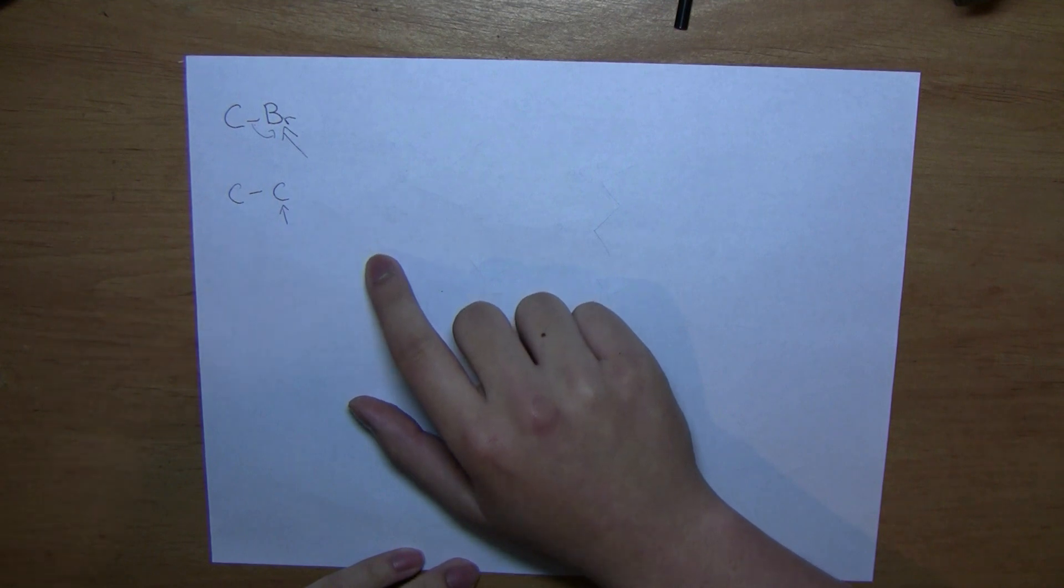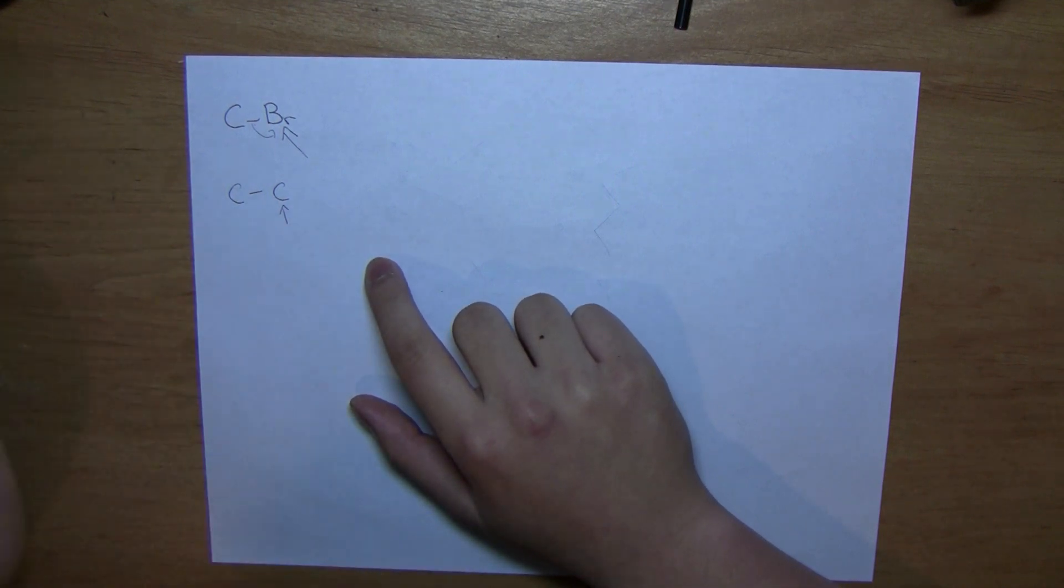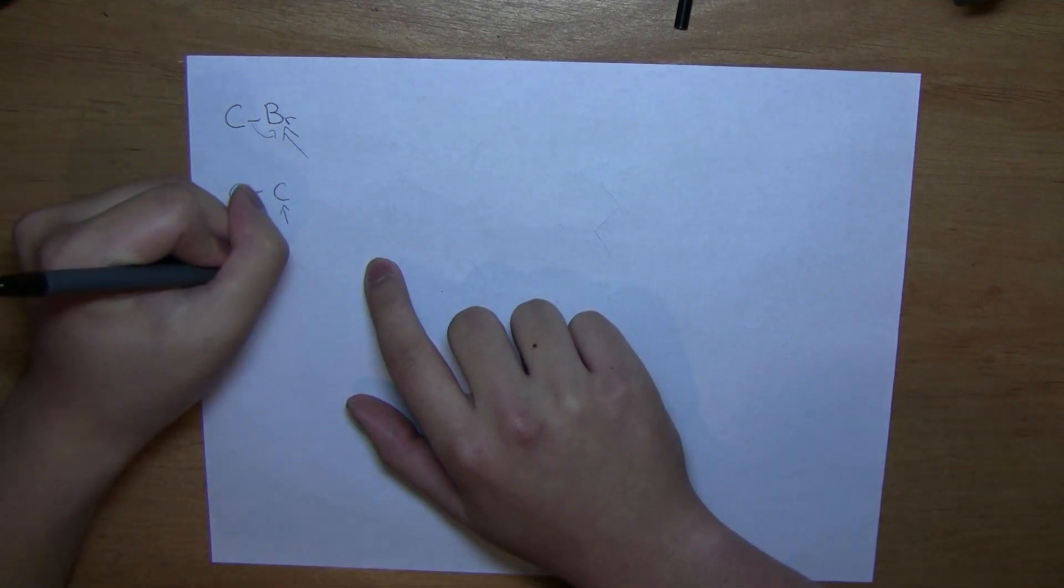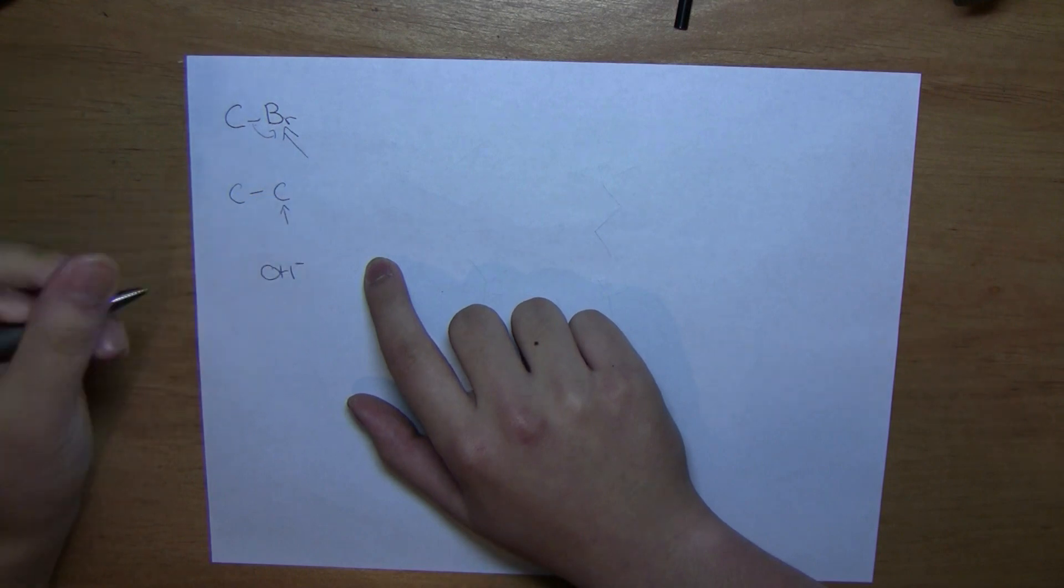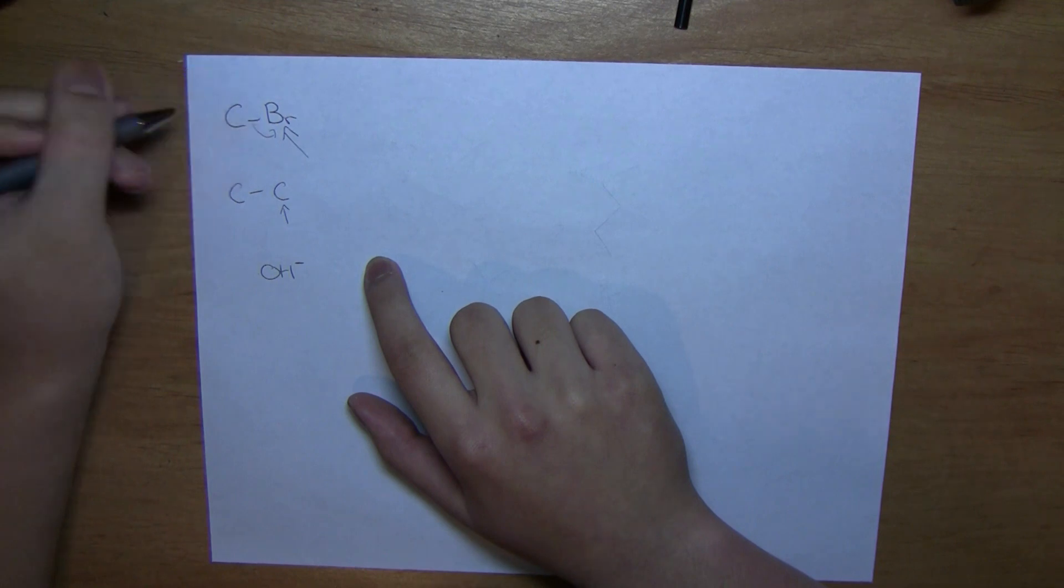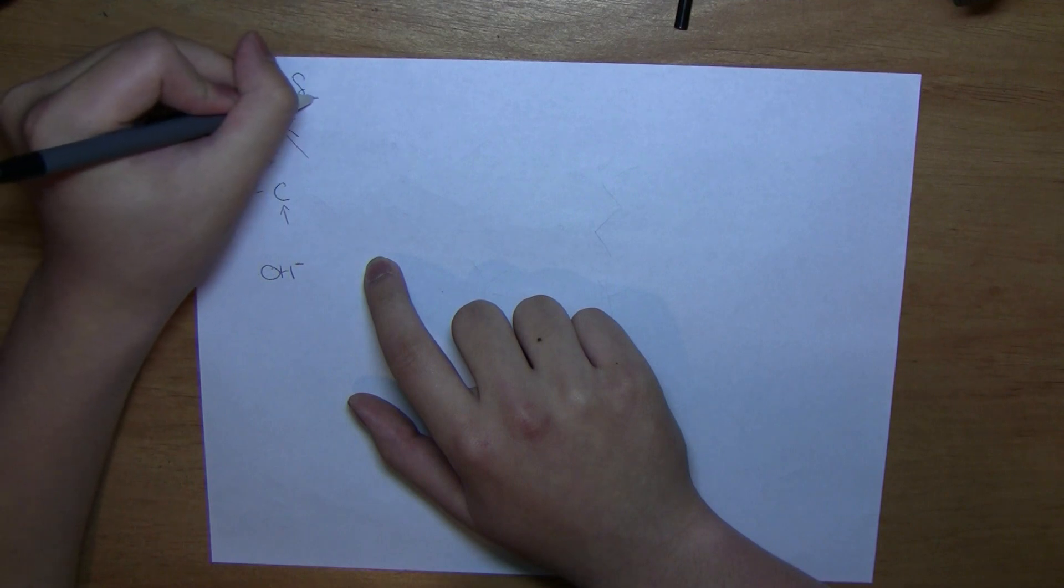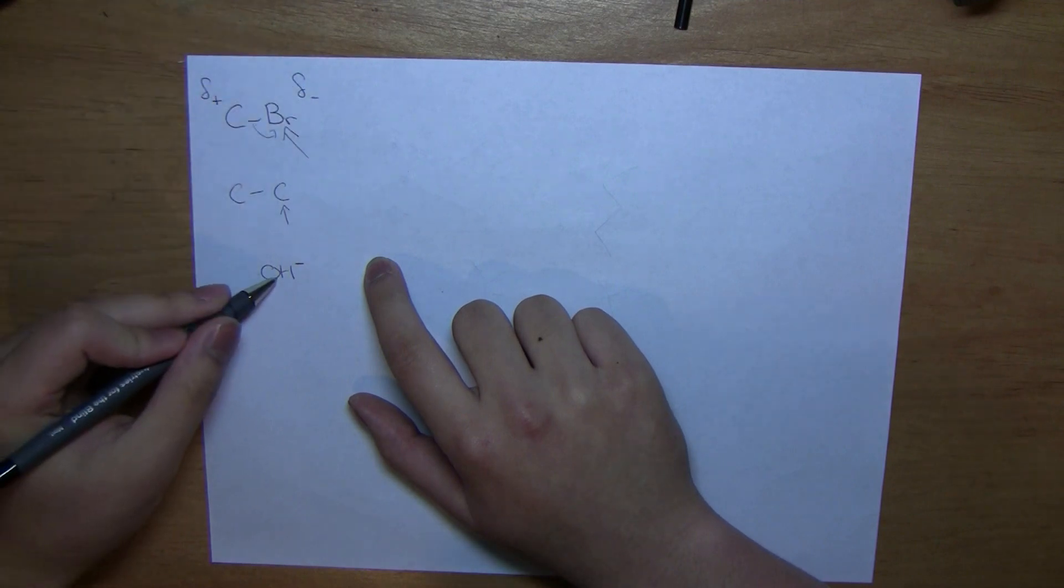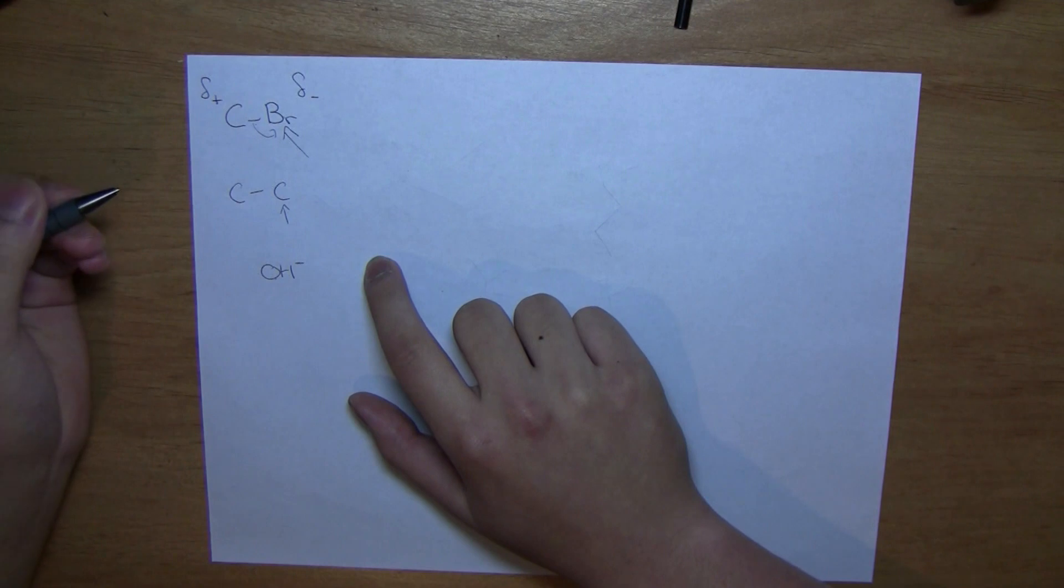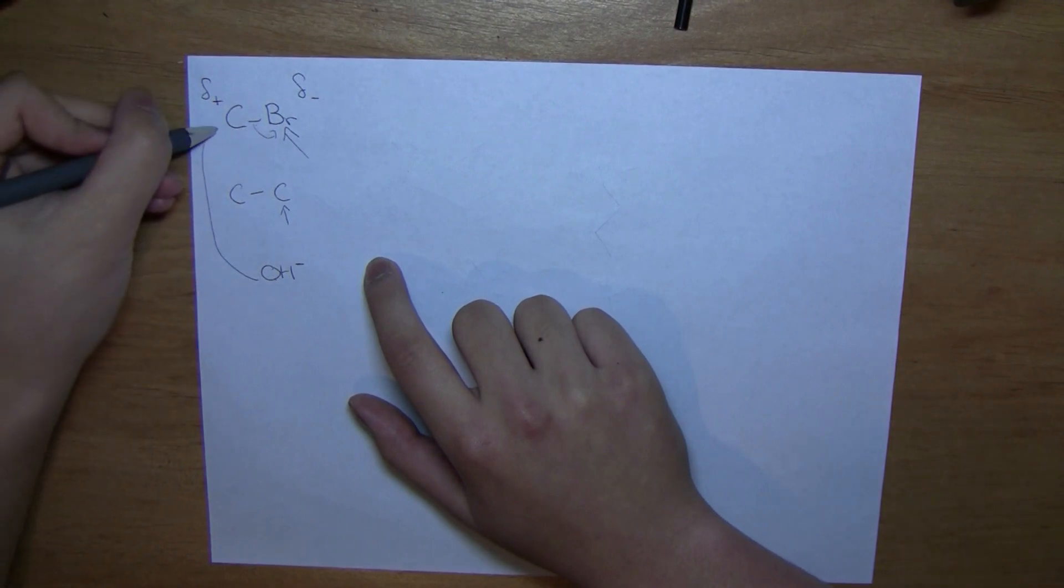Now, for substitution reactions, we want something known as a nucleophile, meaning something that is attracted to a positive charge. A good nucleophile is usually a strong base, such as hydroxide. Now, why do we want a negative charge here? Well, as you can see here, because of the polarity of the bond, the carbon is partially positively charged, and the bromide is partially negatively charged. So therefore, the negative charge of the hydroxide, or the nucleophile, would attack and be attracted to the carbon.